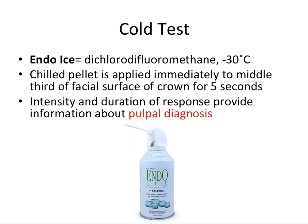The cold test uses a common chemical called endo ice, which is dichlorodifluoromethane and runs around negative 30 degrees Celsius. You spray it onto a little piece of cotton, creating a chilled pellet held in cotton pliers, and apply it immediately to the middle third of the facial surface of a crown for five seconds. Make sure the tooth is thoroughly dried with cotton gauze first. The intensity and duration of the response provides the information we want to know about the pulpal diagnosis.